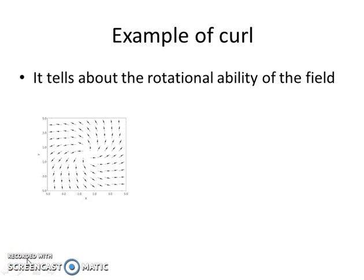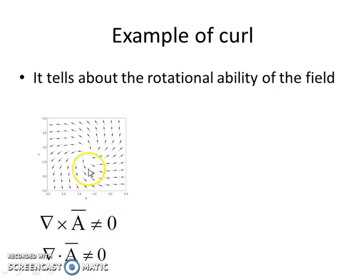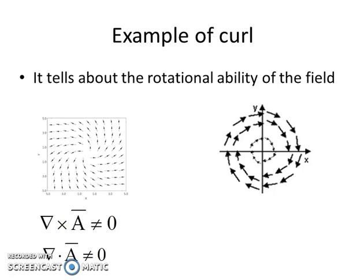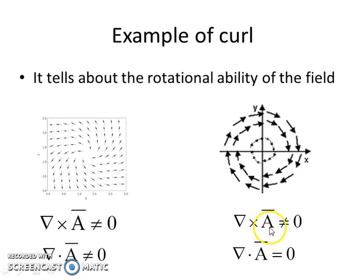Now let's see the example of curl. Curl tells about the rotational ability of the field. The first diagram shows the curling effect of the field, so curl is a non-zero quantity. Here we can see the field is curling and at the same time it is spreading out, so both curl and divergence are non-zero. In another example, the fields are shown as rotational vectors — curl is non-zero — but they are not spreading out, so divergence is zero in this case.